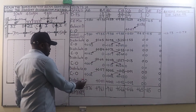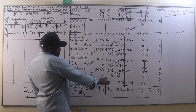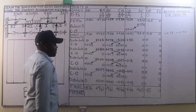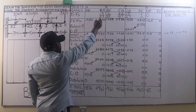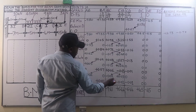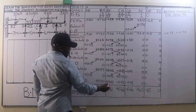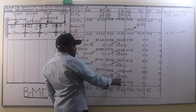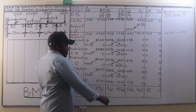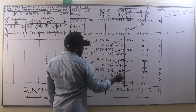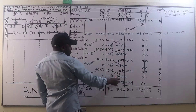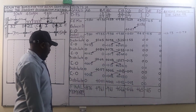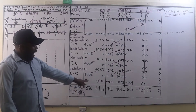Finally we distribute. The excess moment is positive 0.02 — changing the sign. 0.02 times 15/29 is positive 0.01; 0.02 times 14/29 is 0.01. At joint C, excess moment is negative 0.03 — changing the sign. Negative 0.03 times 32/47 is negative 0.02; negative 0.03 times 15/47 is negative 0.01. The others are zeros.